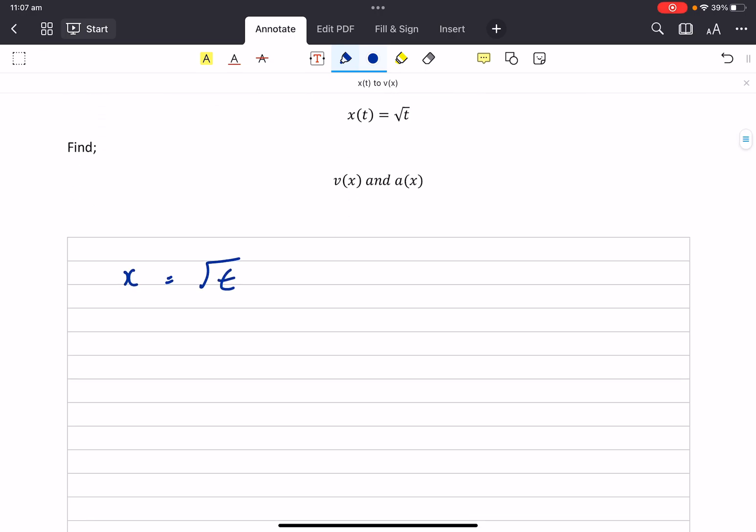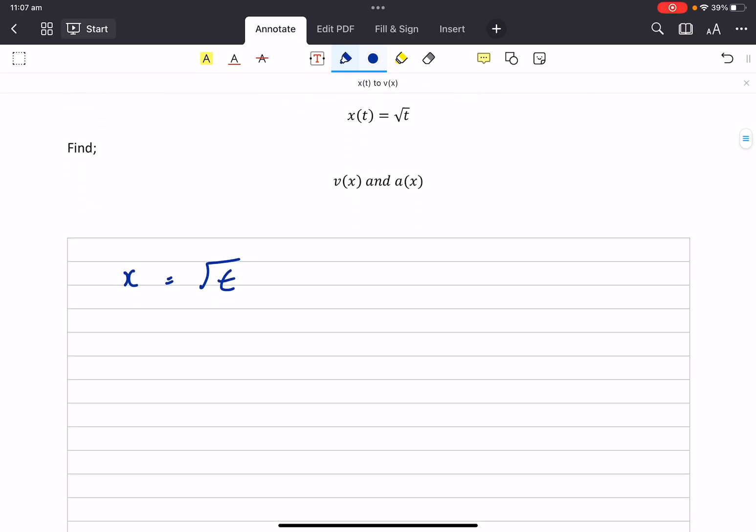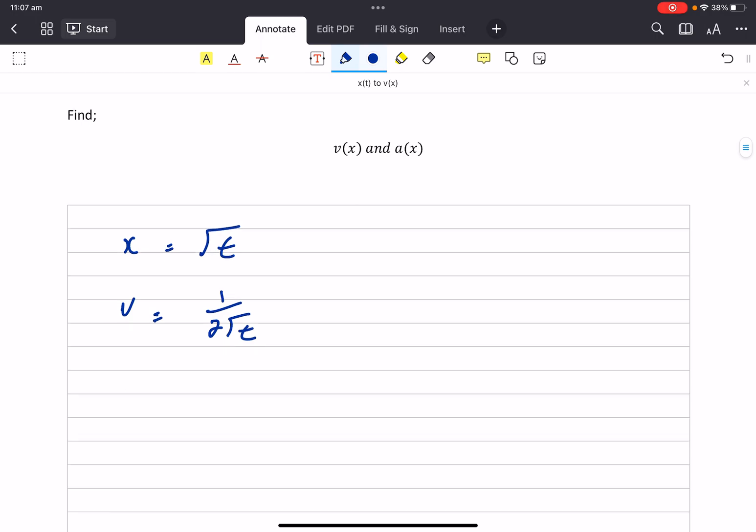We're really comfortable now with just simply differentiating to find velocity. We could go again and get acceleration equals... There we go. That's old hat, old news.